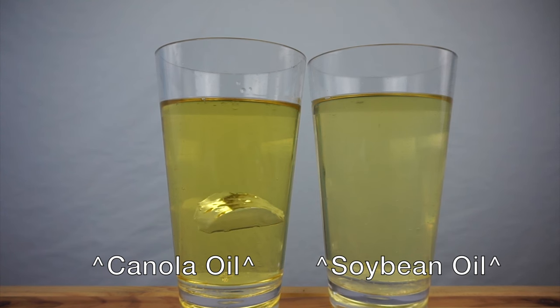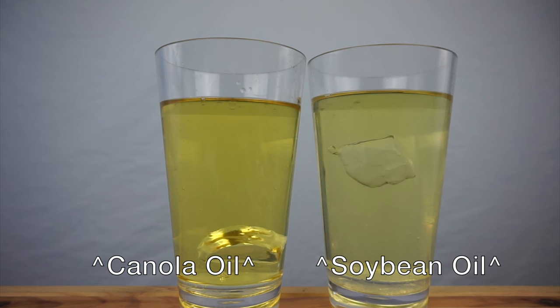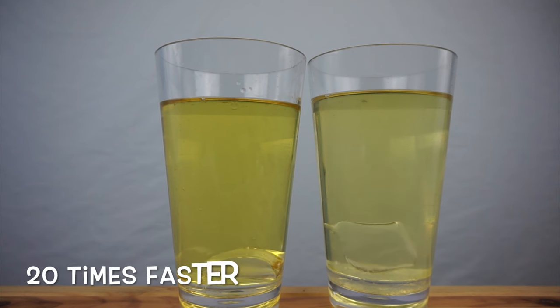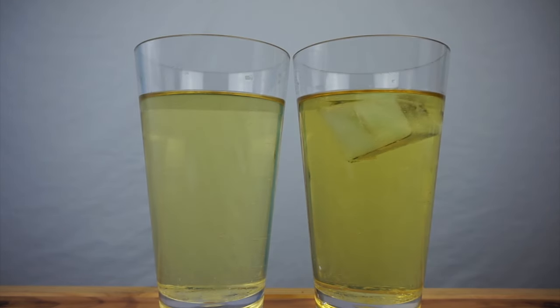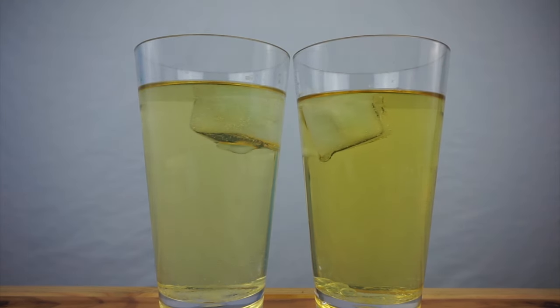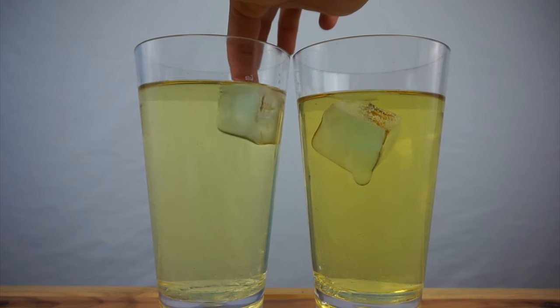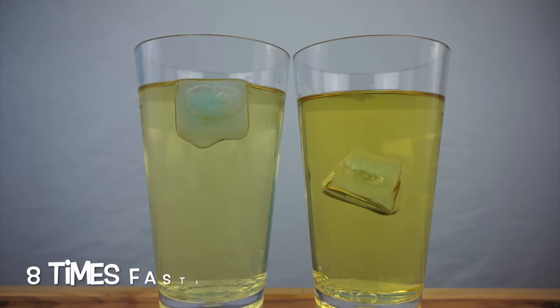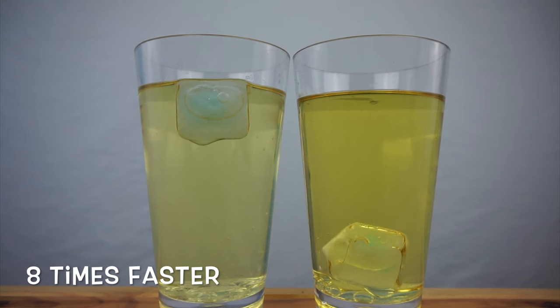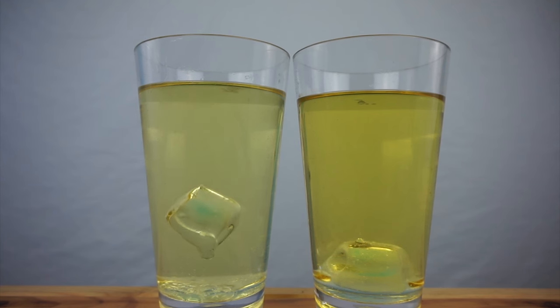This ice cube from an ice machine sank when it was placed in canola oil. And another ice cube from an ice machine hovered for a bit, but then sank when it was placed in soybean oil. But then these ice cubes that were made in an ice cube tray both floated. That is, they floated until I gave them a little nudge to get a better view, and then one of them sank. The second ice cube eventually lost its air bubble, and with a little nudge, it started to sink, but it didn't quite ever make it all the way down to the bottom.